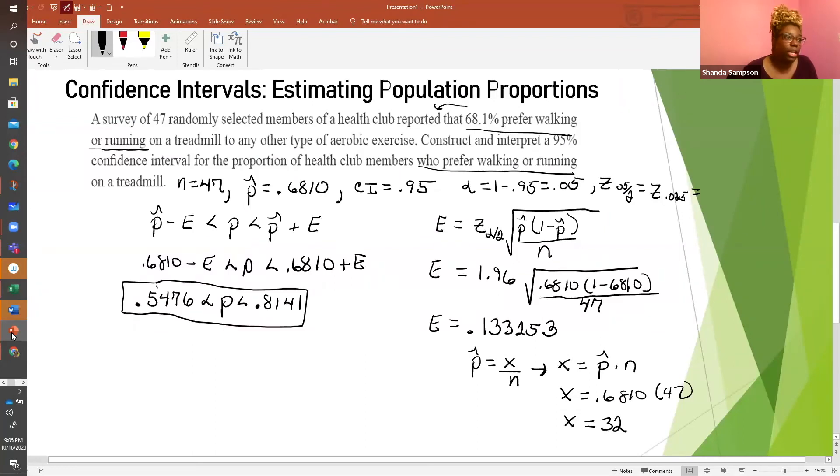If they ask you to construct a percent, then you would go back and you would change these numbers to a percent, but do not change them to a percent unless it asks you to. And you still do this. So if you change it to a percent, it will be 54.76% and 81.41%. But in this case, they didn't ask you for a percent. And now we're going to interpret it.